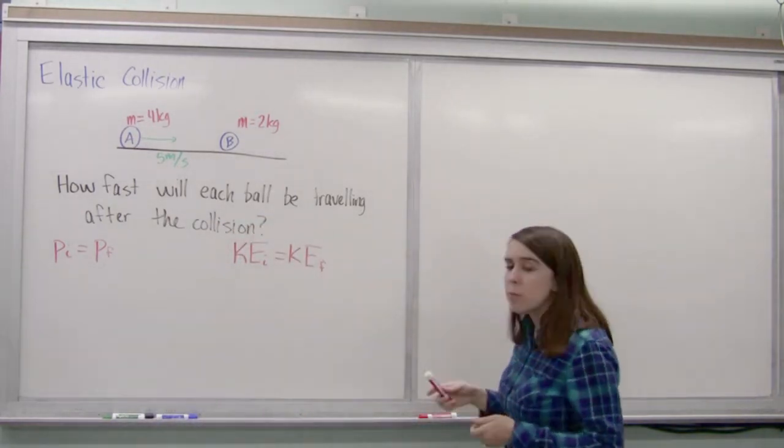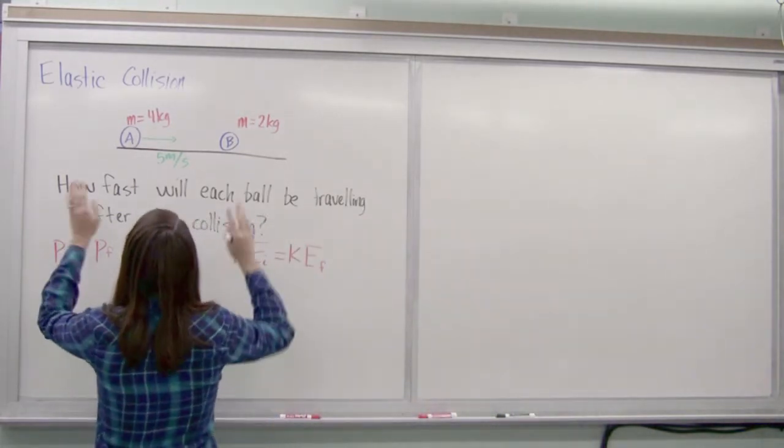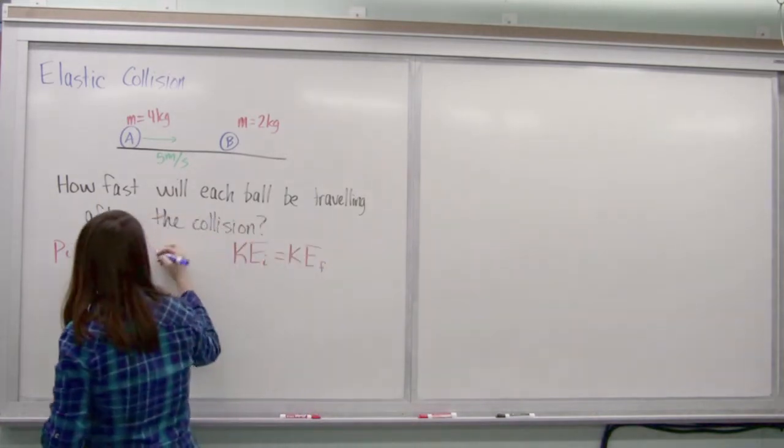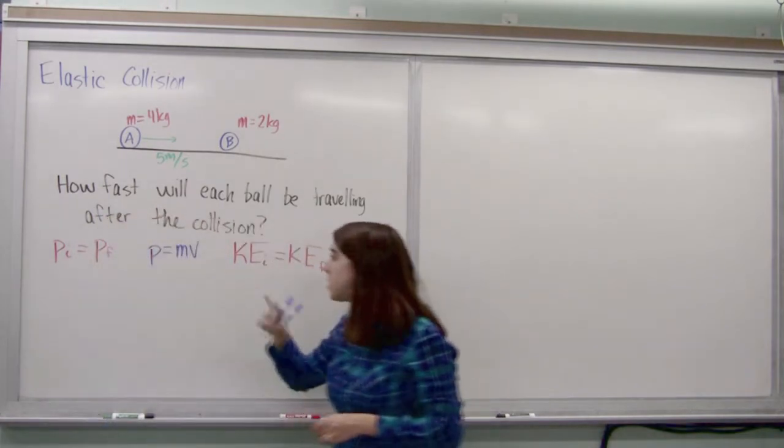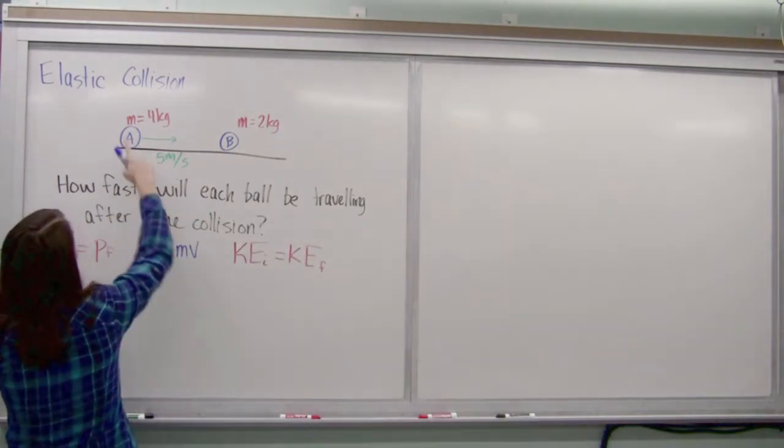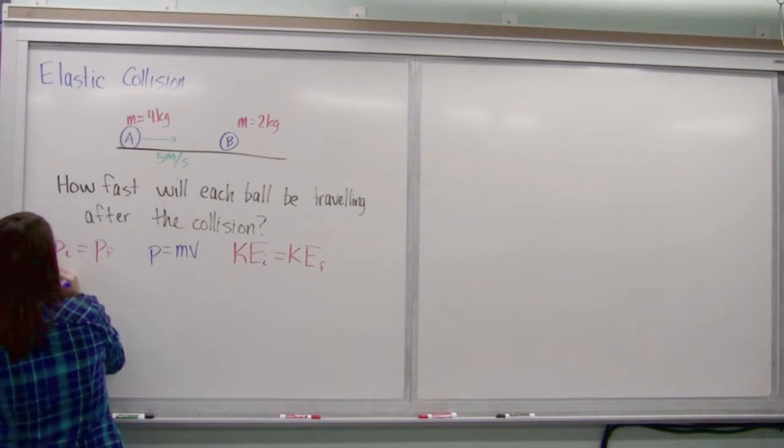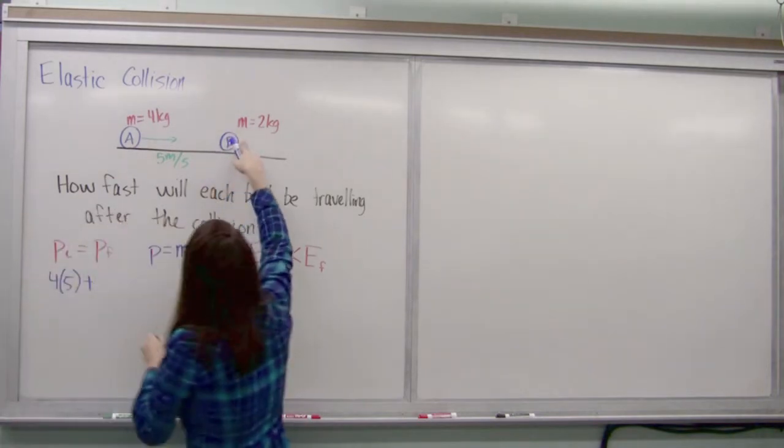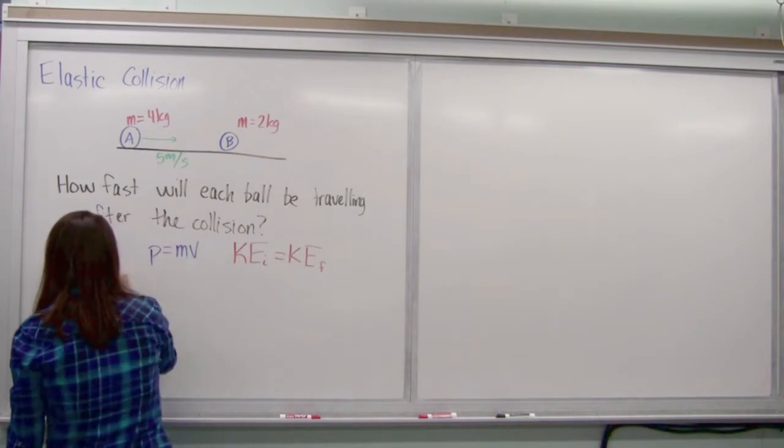Let's start with momentum because that's a simpler equation. Our initial momentum is going to be the sum of momentum at the beginning. I can always remember that momentum is equal to mass times velocity. So I'll have the mass of this one times the velocity of this one. That's going to be 4 times 5 plus the mass of this one times the velocity of this one. Since it's not moving, that's just going to be equal to 0.